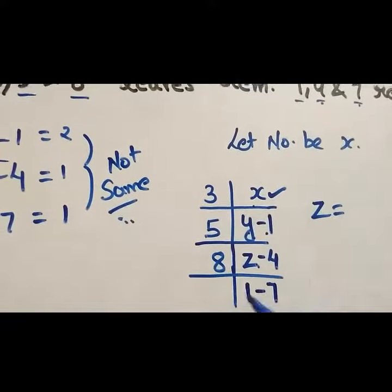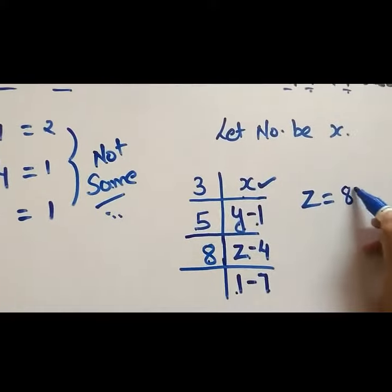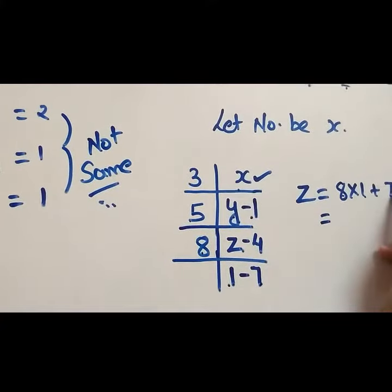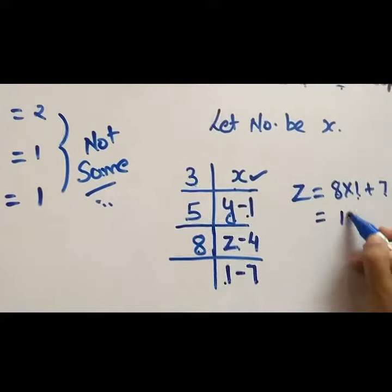Z will be what? 8 into 1 plus 7. 8 into 1 plus 7 is 15.